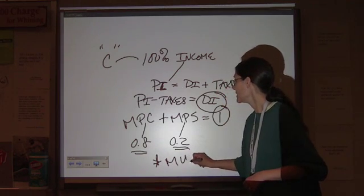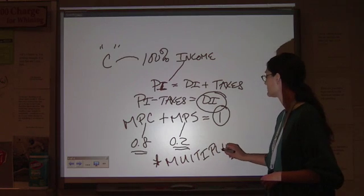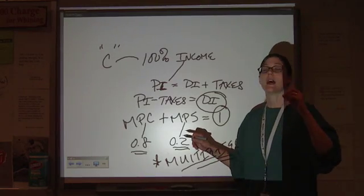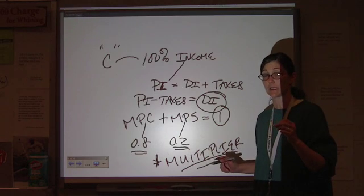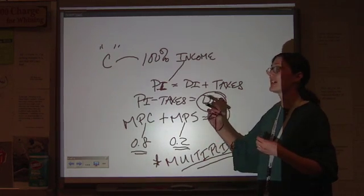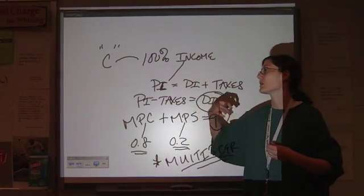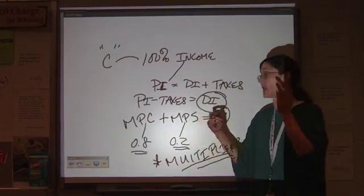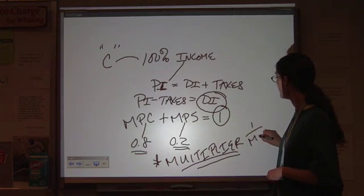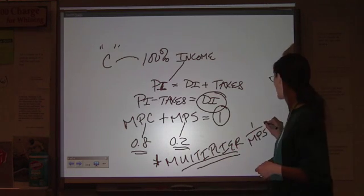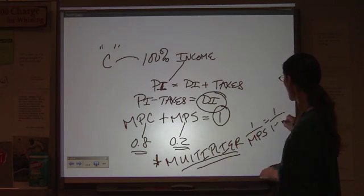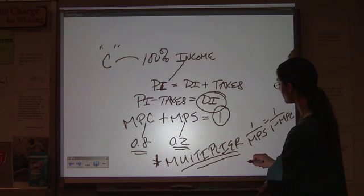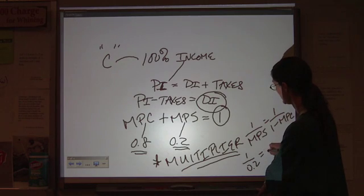Now, what does that mean in the long run? The concept is the multiplier. The multiplier says that the initial change in spending will create an increase in the total amount that you get, equal to 1 over the MPS, which is the same thing as saying 1 over 1 minus the MPC, because it's the same number. In this case, the multiplier would be 5.